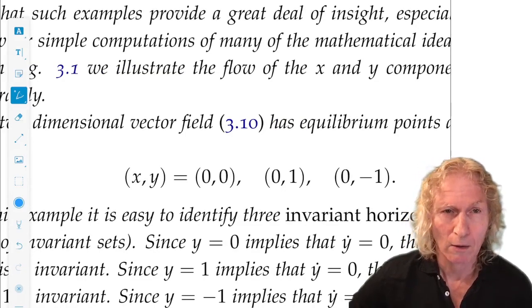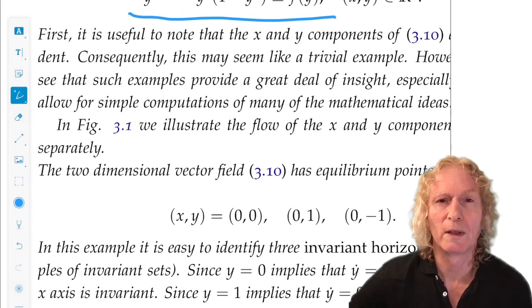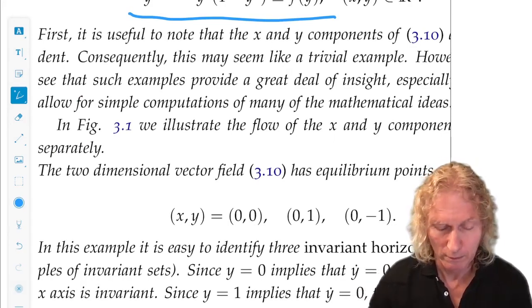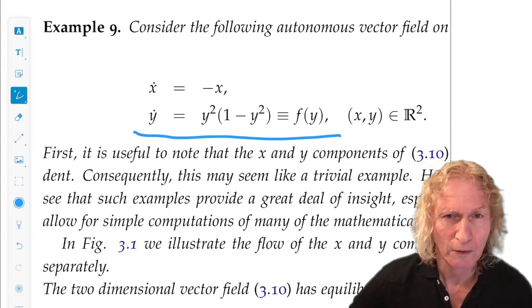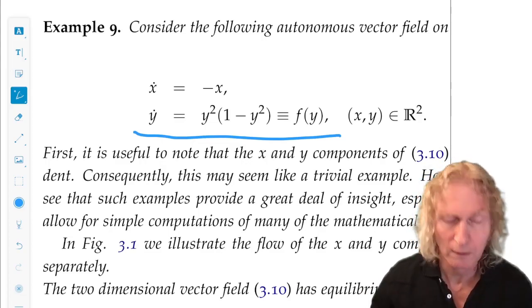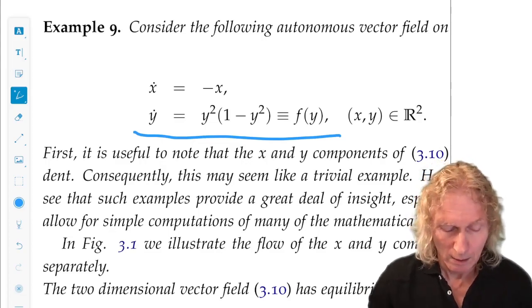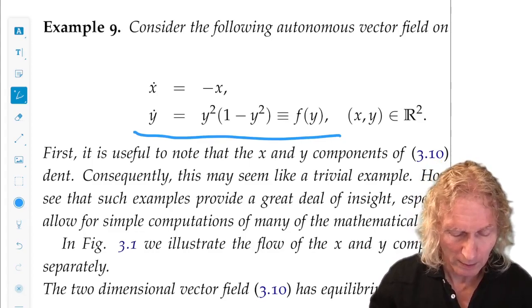All right, now, a point to notice is that we have, from this, four invariant lines. Okay, think about what that means, and how do I get to that conclusion.